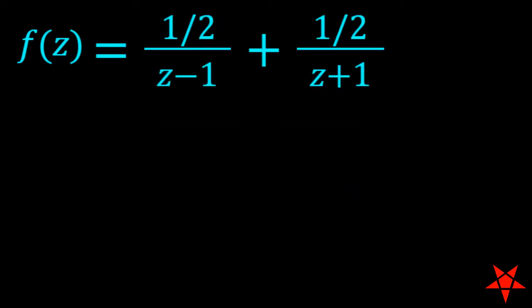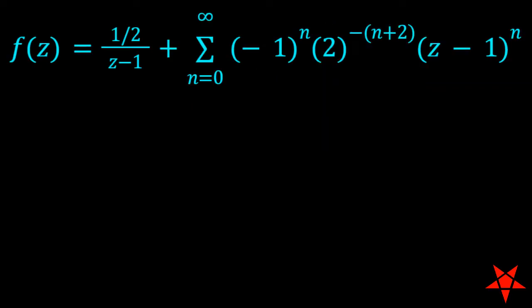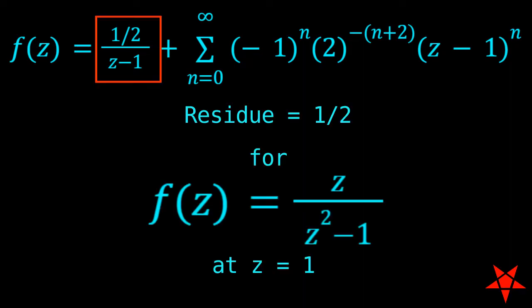Next, we need to express the second component in terms of z minus 1, and the process is identical, save for a factor of negative 1, to that of part a. Our Laurent series now complete, we observe that the coefficient of the 1 over z minus 1 term is 1 half, and thus we have the residue for z over z squared minus 1 at z equals 1.